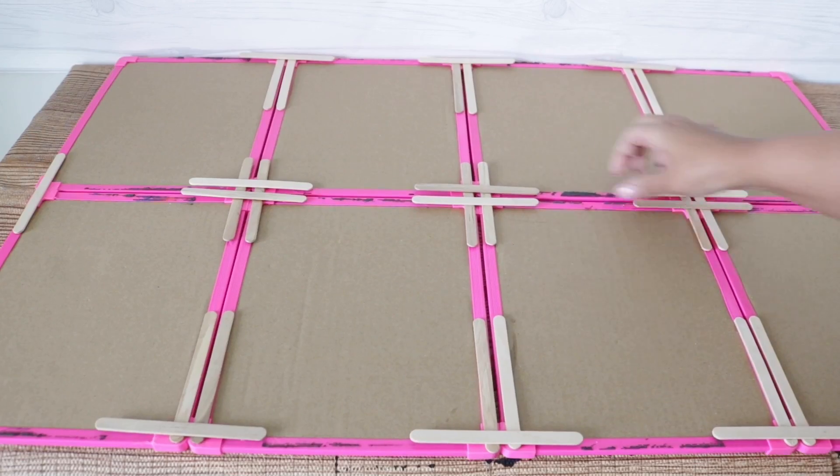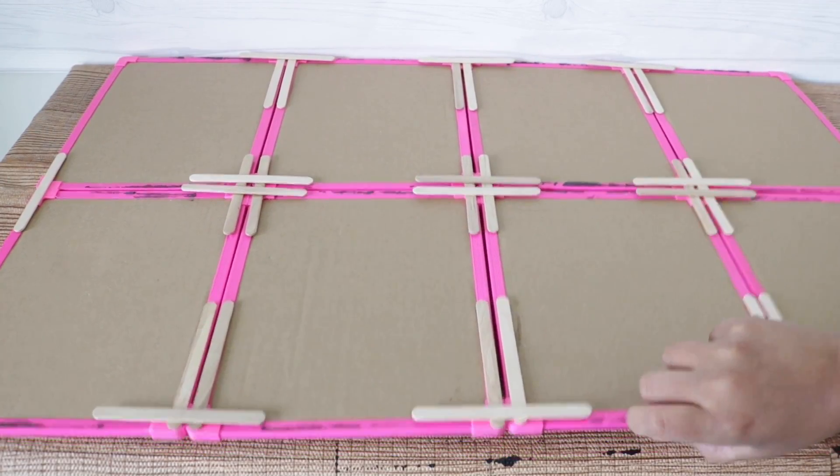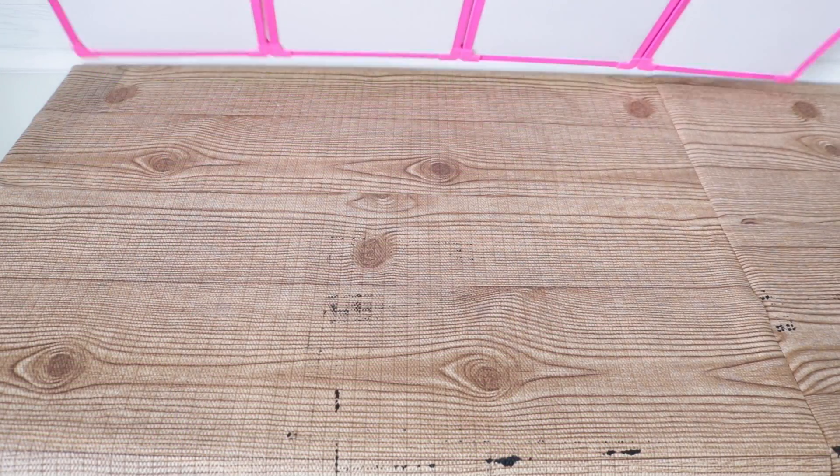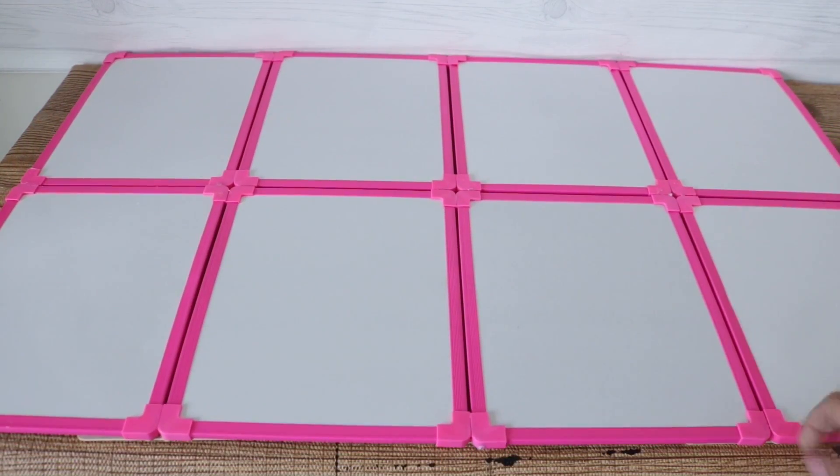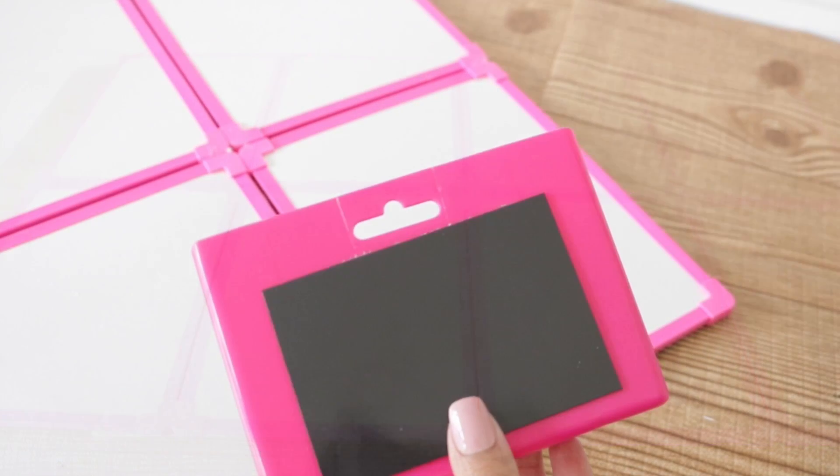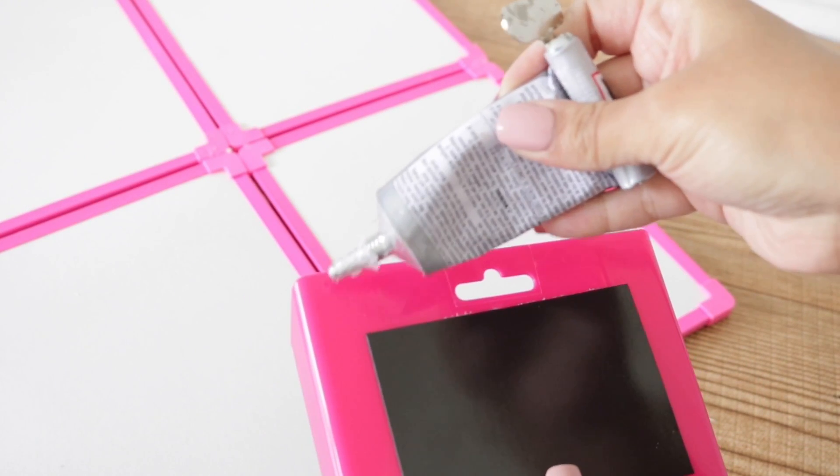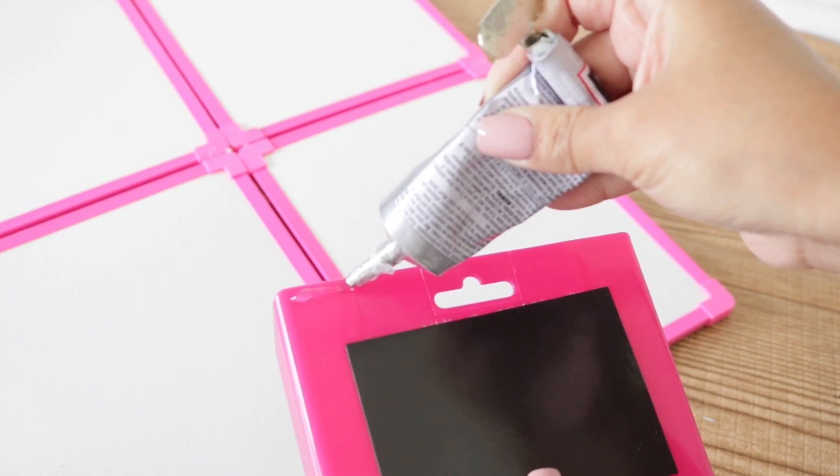Now that everything is dry, you want to make sure that all of your popsicle sticks are fully dry, and you can go ahead and flip your command center over so you can add your accessories. To hold all of my markers, I decided to use this magnetic holder from Dollar Tree which is in the back to school section.